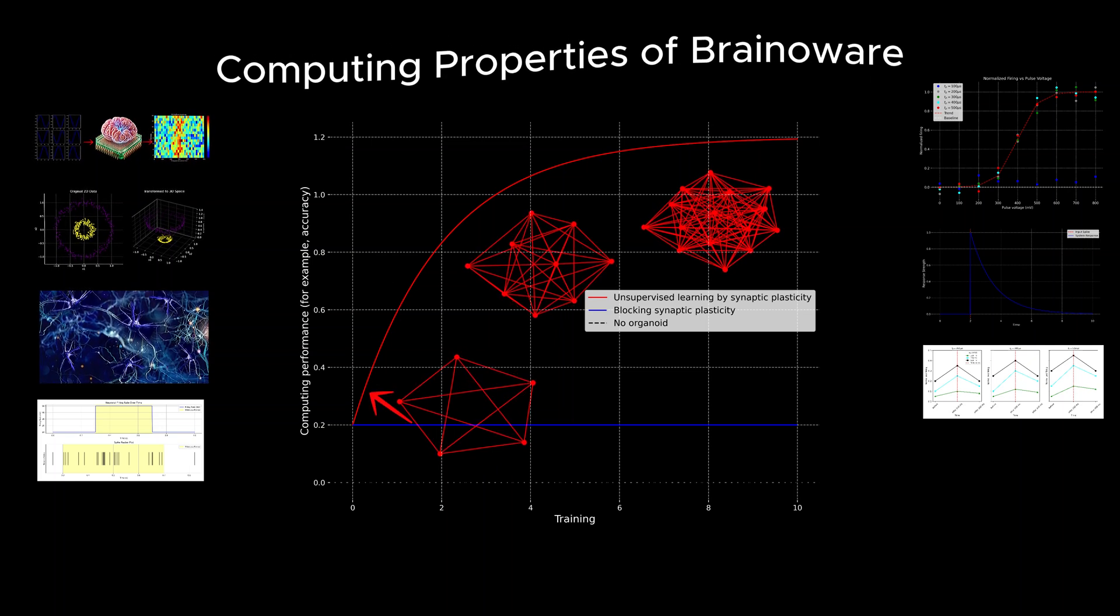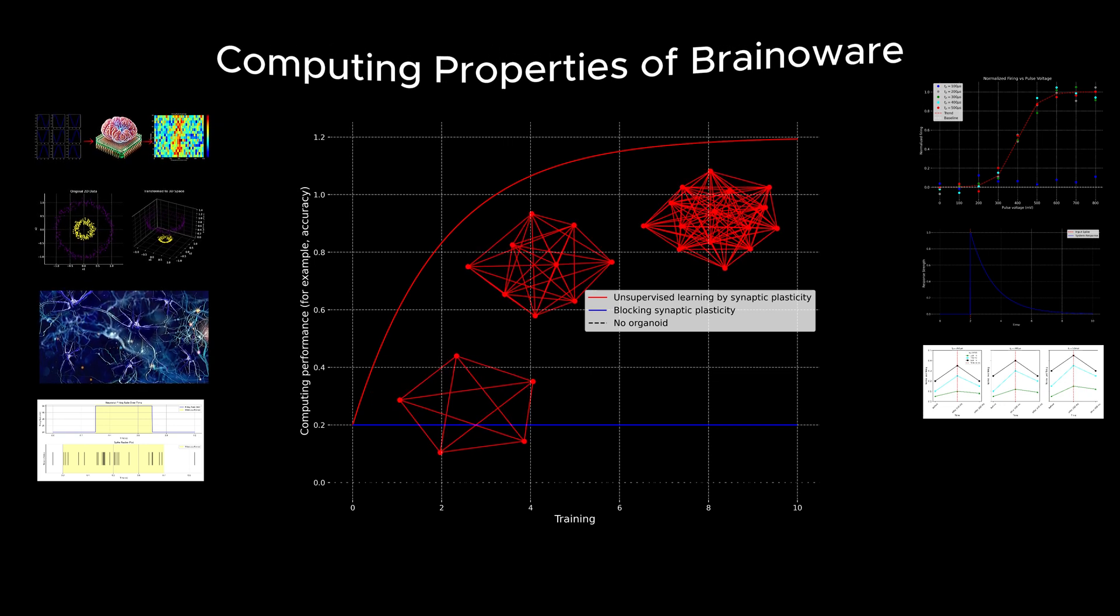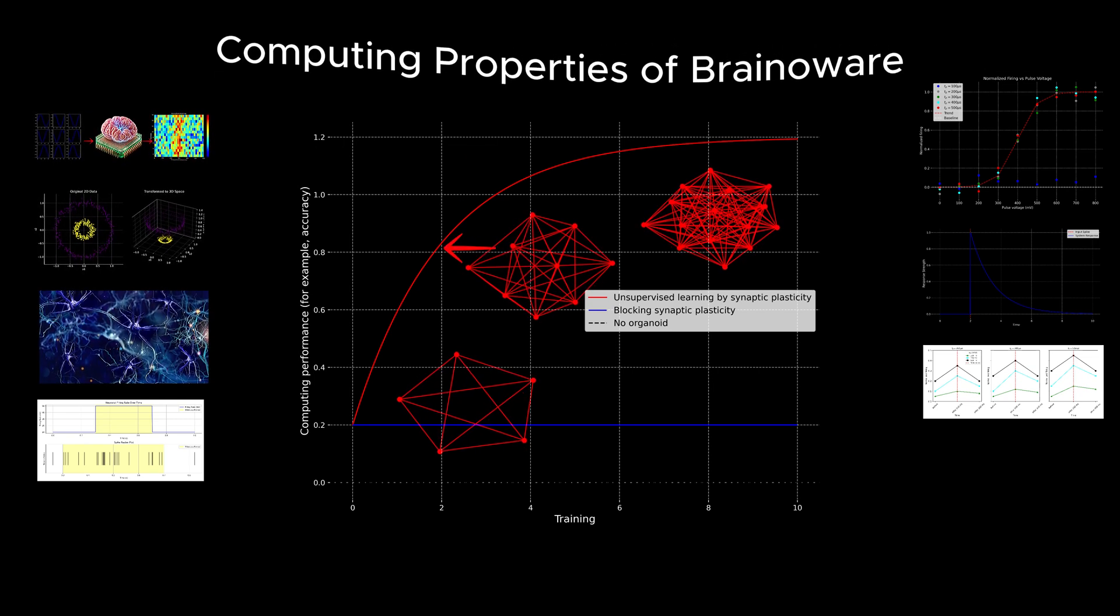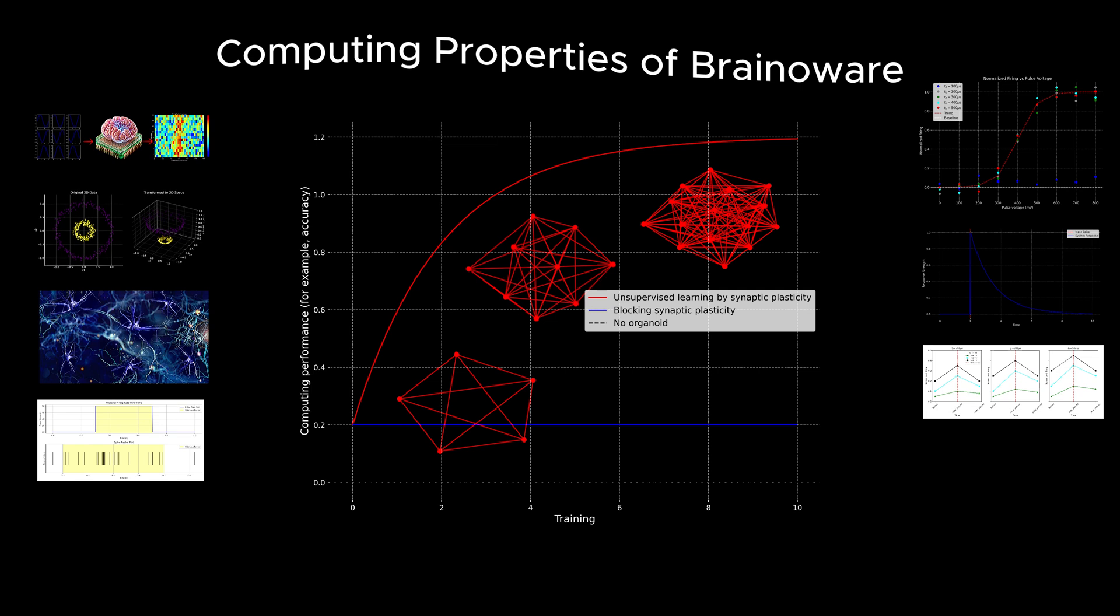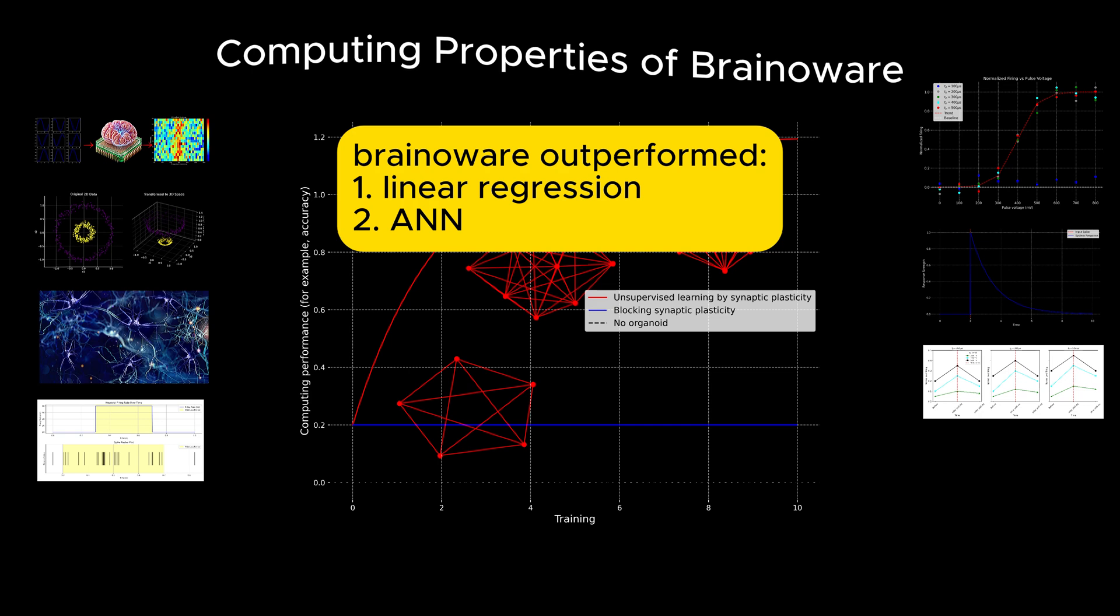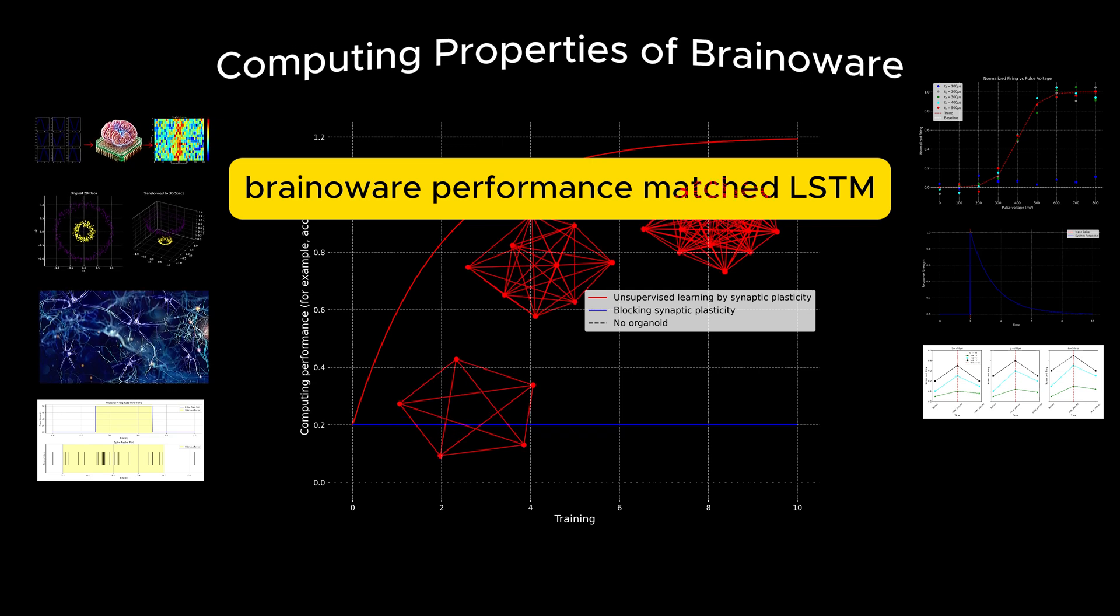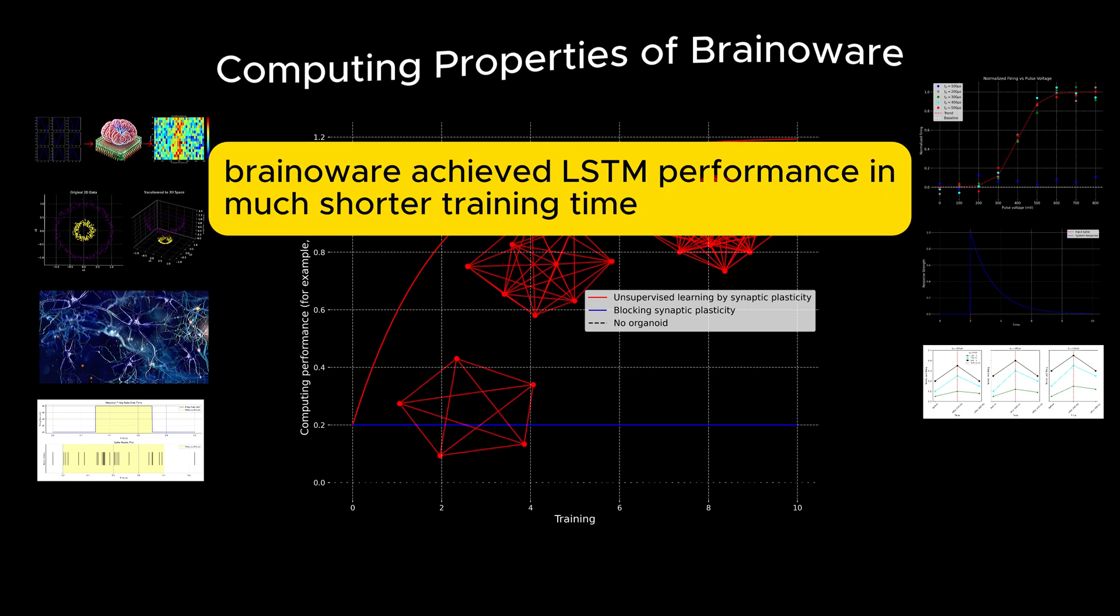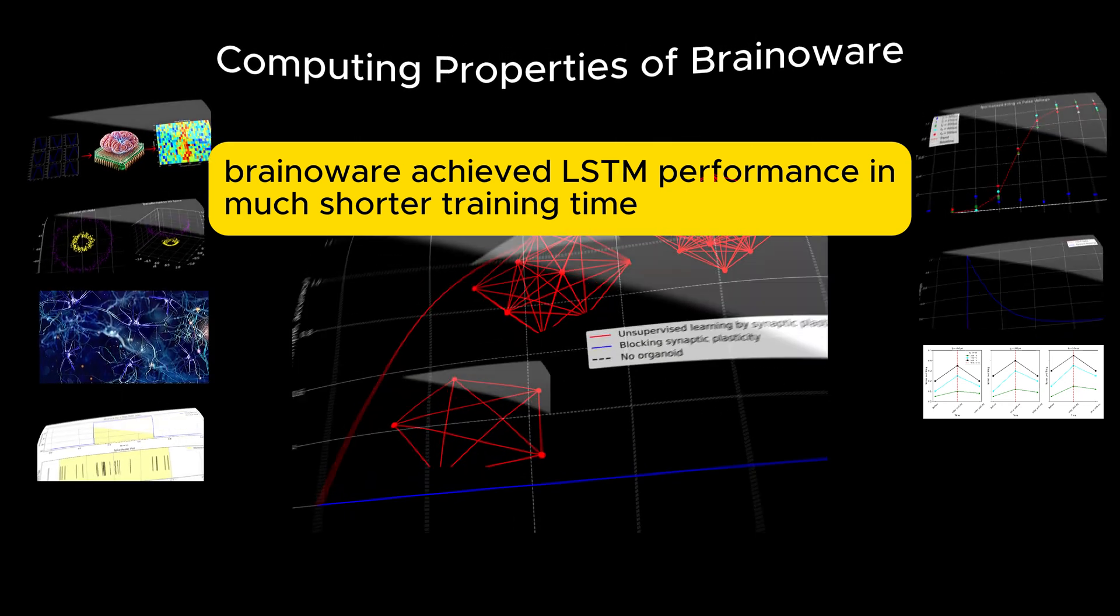Initially, BrainAware achieved a low regression score of 0.36 indicating limited predictive accuracy. However, after four training epochs, its regression score improved significantly to 0.81 driven by changes in the organoid's functional connectivity through neuroplasticity. Compared to other methods, BrainAware outperformed both the conventional linear regression and a typical artificial neural network. BrainAware's performance matched that of artificial neural networks with long short-term memory units. Notably, BrainAware achieved comparable accuracy with over 90% less training time, highlighting its efficiency in processing time-dependent data.